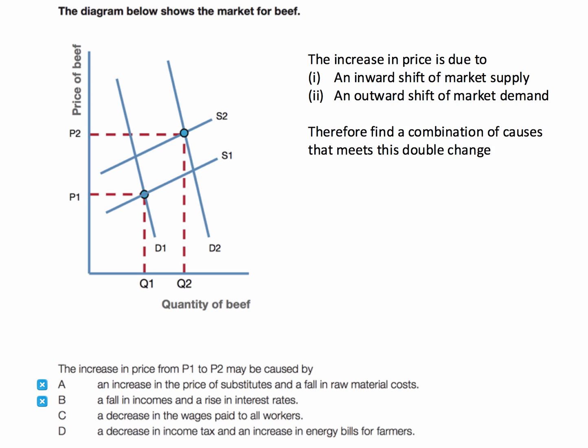B is wrong. A fall in incomes and a rise in interest rates would both cause an inward shift of demand.